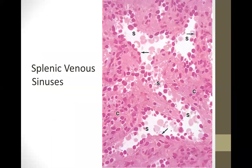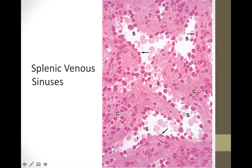This is an example of splenic venous sinuses. The cells pointed are your endothelial cells. The splenic cords of Billroth are the dark areas, and the spaces are the splenic sinuses.